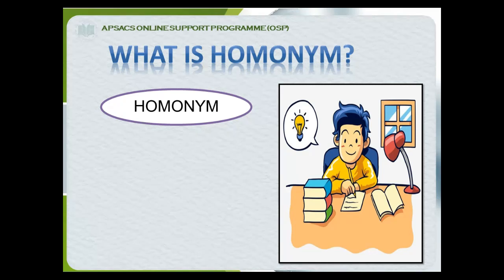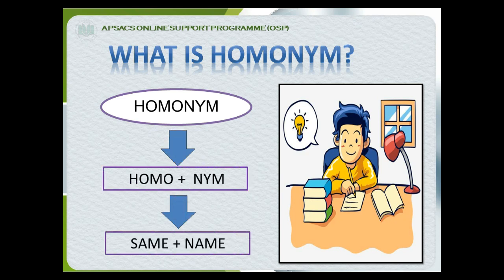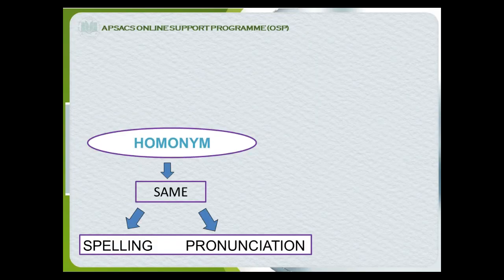So now what do we mean by homonym? The word homonym consists of two syllables, homo and nym, where homo means same and nym means name. That means homonyms are words with the same name — same name means words having the same spellings and pronunciations.